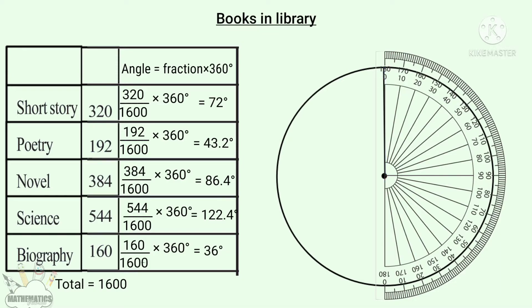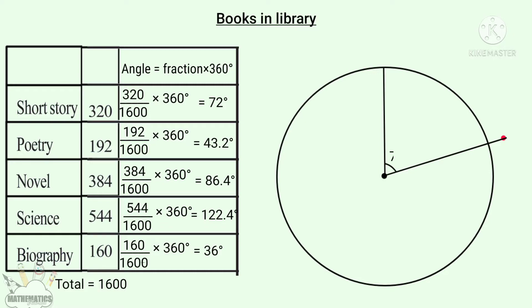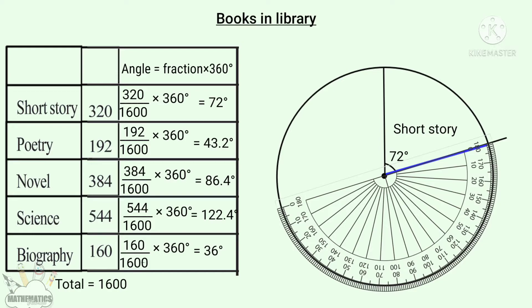We count up: 0, 10, 20, 40, 60, 70, 72. So we have a segment at the 72-degree angle — that is the Short Story segment. Now we have a segment for Poetry. The Poetry angle is 43.2 degrees. So we place the segment at 43.2 degrees using the protractor, with the E-line at 0.